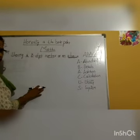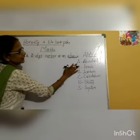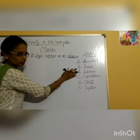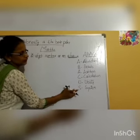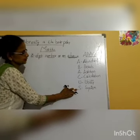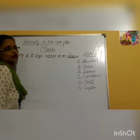First of all, let me tell you the root form of an abacus. Abacus is A for abundant, B for beads, A for addition, C for calculation, U for utility, and S for system. Means lots of beads which are used for addition.